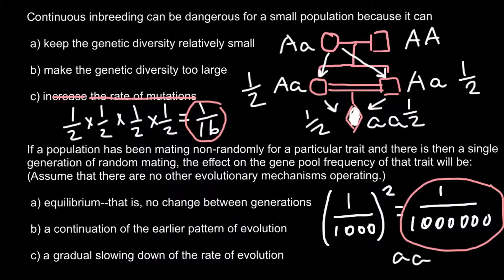We can also cross out answer B — make the genetic diversity too large — because we cannot increase diversity with consanguineous inbreeding. With each cycle of inbreeding, genetic diversity is lost and heterozygosity is lost by one half. After about ten such cycles, all progeny would be homozygous at all loci, and such genetically uniform progeny we call a pure line. So the correct answer is answer A: inbreeding keeps the genetic diversity relatively small.